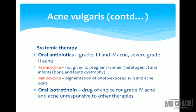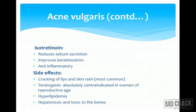Oral antibiotics are indicated for grade 3 and 4 acne, and severe grade 2 acne. Tetracycline is contraindicated in pregnant women and infants. Minocycline can cause pigmentation in photo-exposed areas and of acne scars. Oral isotretinoin is the drug of choice for grade 4 acne and acne not responding to other therapies — it acts on all levels of etiopathogenesis, reducing sebum secretion, improving keratinization, and having anti-inflammatory action. Side effects include cracking of the lips and dryness of the skin. It is teratogenic and absolutely contraindicated in women of reproductive age. It can also cause hyperlipidemia, hepatotoxicity, and bone toxicity.